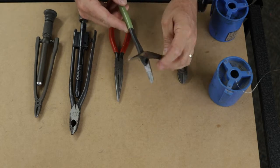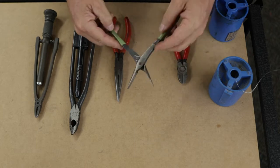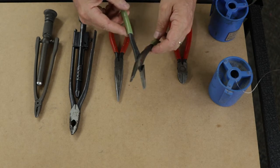These duckbill pliers have actually had their faces ground smooth so they don't mar the wire when you're pulling it through. But a pair of duckbill pliers can be helpful.